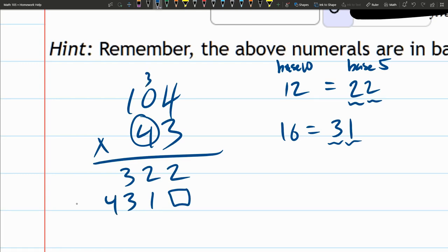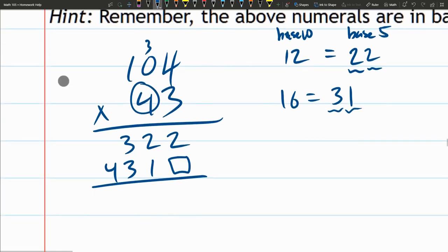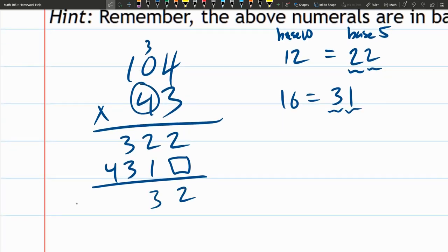Now 2 plus 0 is 2, 2 plus 1 is 3, 3 plus 3 is 6, but remember you can't write a 6 in base 5, it's too big. So 6 is 1 five and 1 left over.